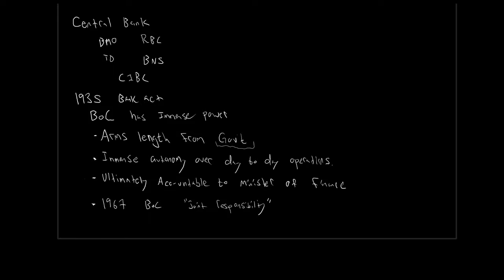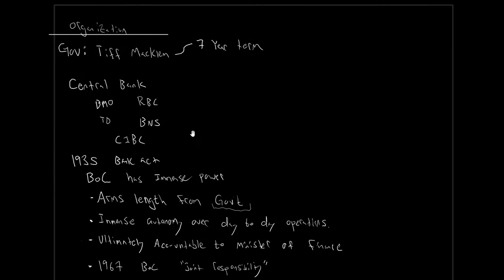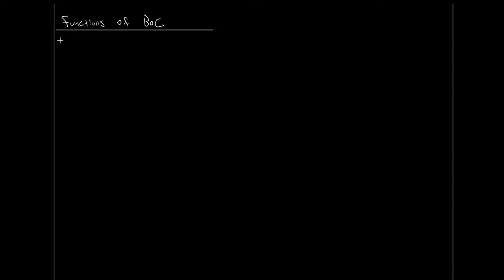So that's a bit of background information, a bit of insight into the institutional and regulatory and legal sides of the Bank of Canada. Let's switch gears and go talk about the four basic functions of the Bank of Canada — why do they exist, what do we want them to be doing for us, what's their main purpose for existing? We'll go through functions of the Bank of Canada — BOC is my abbreviation.